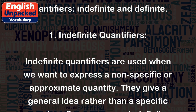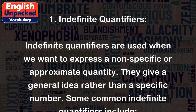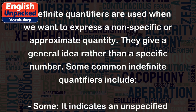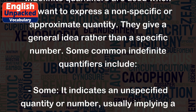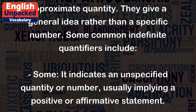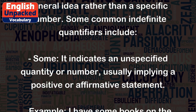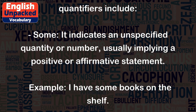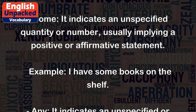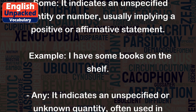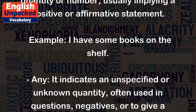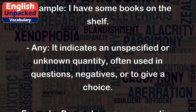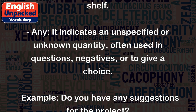Indefinite quantifiers are used when we want to express a non-specific or approximate quantity. They give a general idea rather than a specific number. Some common indefinite quantifiers include: 'Some' — it indicates an unspecified quantity or number, usually implying a positive or affirmative statement. Example: I have some books on the shelf.